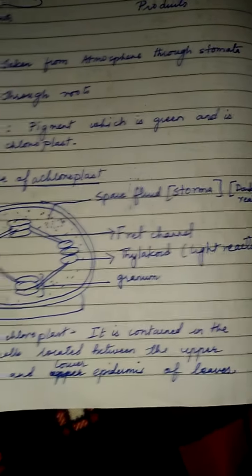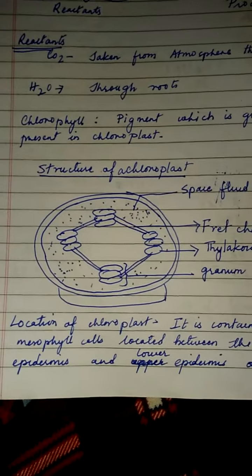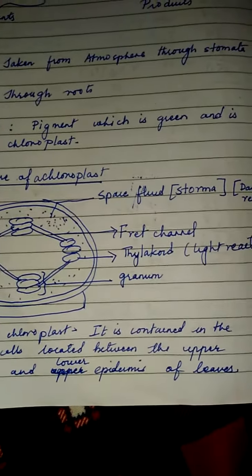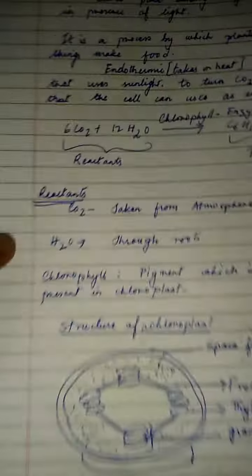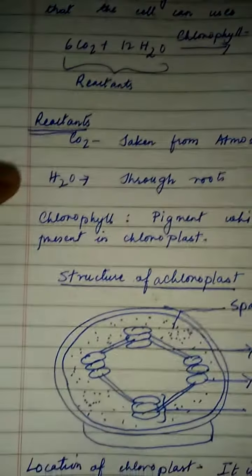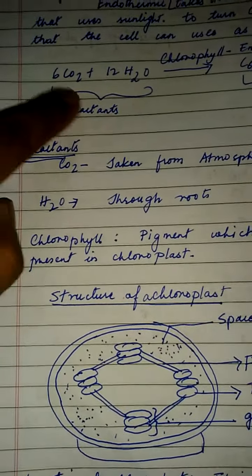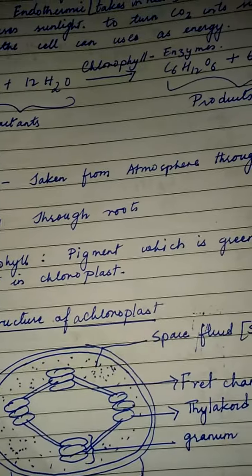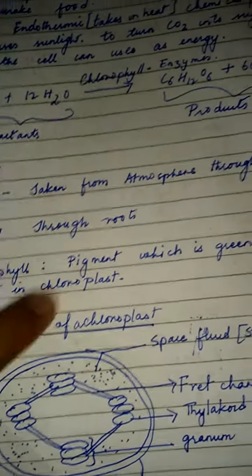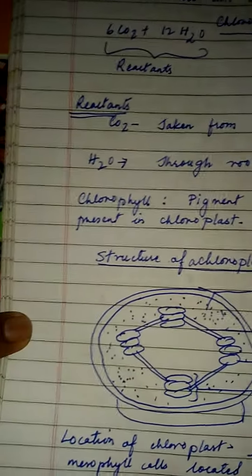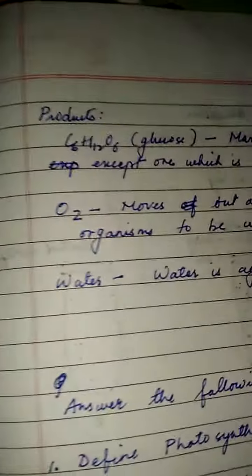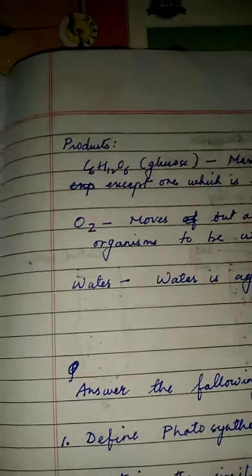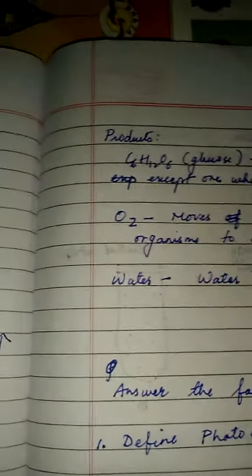The location of the chloroplast: it is contained in the mesophyll cells, located between the upper epidermis and the lower epidermis of the leaves. Now moving to the products — the reactants are carbon dioxide, water, and the enzyme chlorophyll.